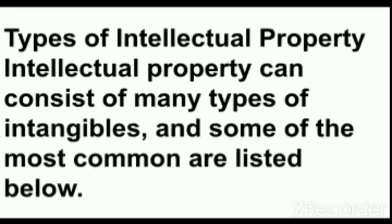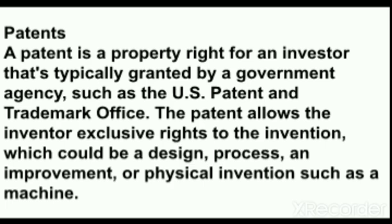We will discuss the types of intellectual property. It can consist of many types of intangible assets, and some of the most common are: first, patent. A patent is a property right for an inventor, typically granted by a government agency such as the US Patent and Trademark Office. The patent allows the inventor the exclusive right to the invention, which could be a design, process, improvement, or physical invention such as a machine.